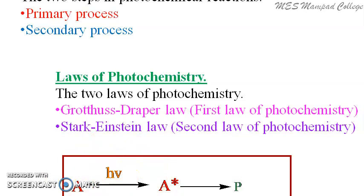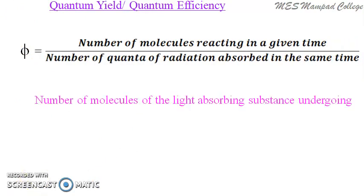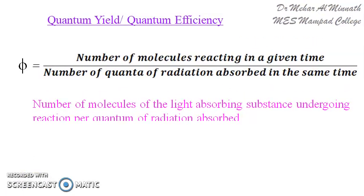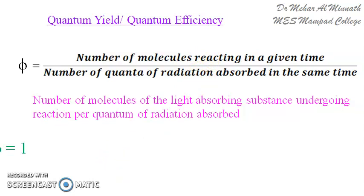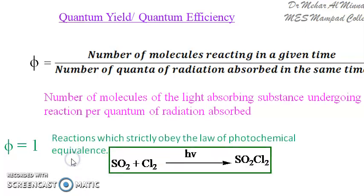Now, when we look at quantum yield, what is quantum yield or quantum efficiency? It is designated by phi, and is equal to the ratio of the number of molecules reacted to the number of quanta of radiation absorbed. If the number of molecules reacted and the quanta of radiation absorbed are the same, then phi equals 1. When phi equals 1, such reactions strictly follow the Stark–Einstein law.